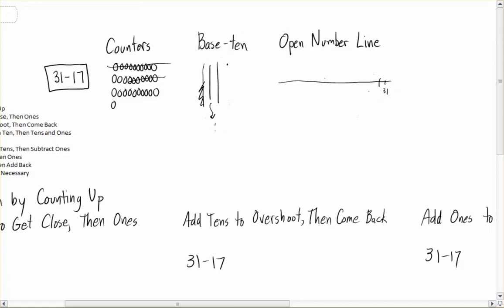The open number line, there's a couple different ways to think about this. You can think about 31 and moving backwards 17 from 31, that's take away. Or you can think about counting on. If I think of this as 0 down here and I know 17 is in here, what do I need to count on to get up to 31? That'll give me 31 minus 17.